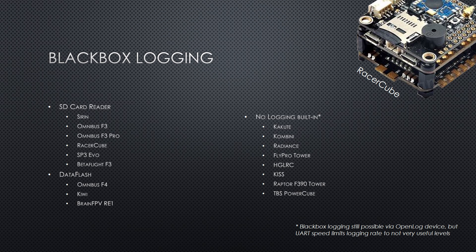This is my favorite slide — the black box logging slide. I love black box logging. Boards with an SD card reader are the Sirin, the Omnibus F3, the Omnibus F3 Pro, the Racer Cube, and the SP3 Evo. Boards with a data flash chip are the Omnibus F4 (soon to have an SD card reader), the Kiwi, and the Brain FPV. The other boards listed have no built-in black box logging. In theory you could hook up an OpenLog device, but the UART speed limits logging to levels that aren't very useful — you just can't log fast enough over a UART anymore, unless all you want is stick overlays for playback.